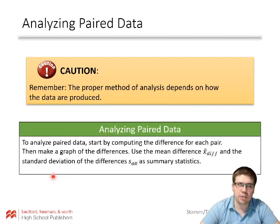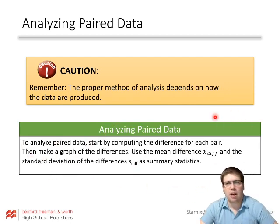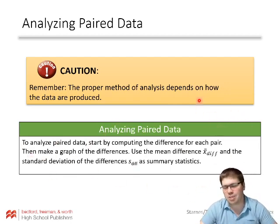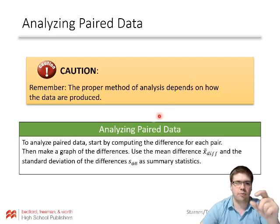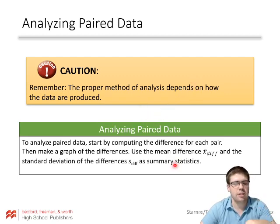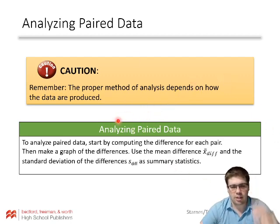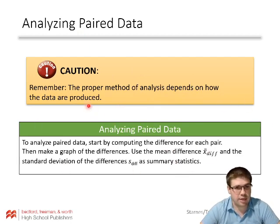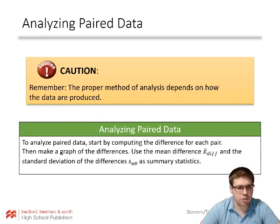In fact, it's inappropriate to use two-sample T procedures here because one of our requirements is that we have independent random samples. These pairs wouldn't be independent — they're related; they're twins. So they aren't independent random samples, they're paired. We should do a paired analysis and look at a list of differences.